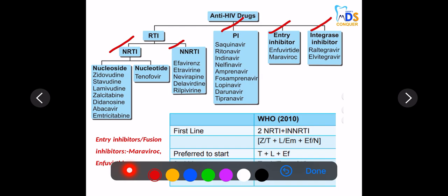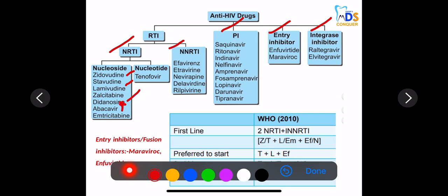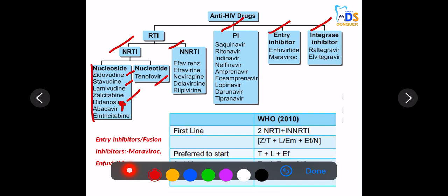Understanding the pathogenesis helps make the classification easy. A useful mnemonic: almost all nucleoside reverse transcriptase inhibitors end with '-dine' — like zidovudine, stavudine, lamivudine — or '-bine' and '-sine,' except abacavir. So remember: dynes, binds, and sines except abacavir. For nucleotides, there is only one drug: tenofovir. All dynes are NRTIs except abacavir, and tenofovir is the nucleotide.